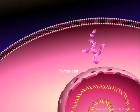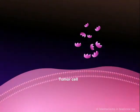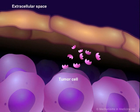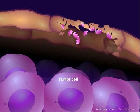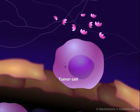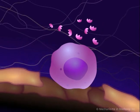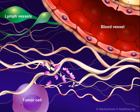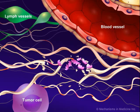When a tumor cell metastasizes, it breaks off from the main tumor and enters the extracellular space. Tumor cells secrete MMP, which degrades the collagenous extracellular matrix, or ECM, breaking through the basement membrane that surrounds the tumor and allowing the tumor cell to migrate toward the blood or lymph vessels.